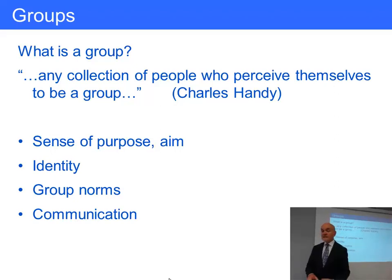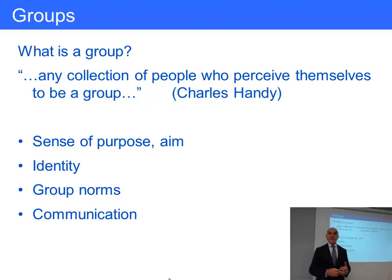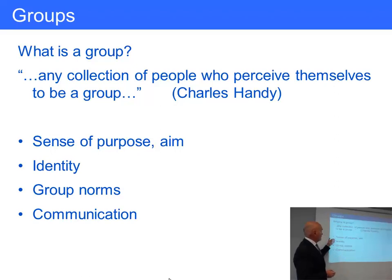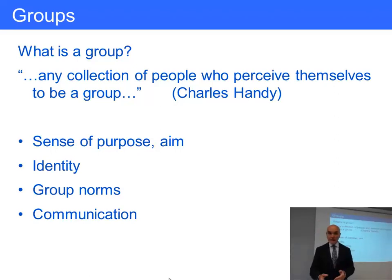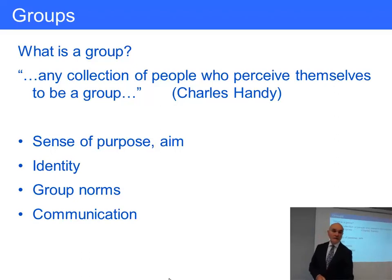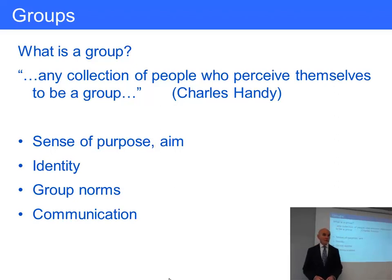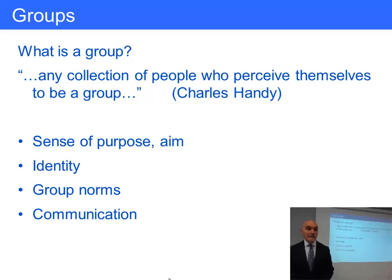The characteristics of groups are that they have an aim or a sense of purpose; that there's a feeling of who is in the group and who is not — us and them, so to speak. There are group norms: accepted ways of behaving which have often evolved as a group evolves. And fourthly, there's communication within the group.